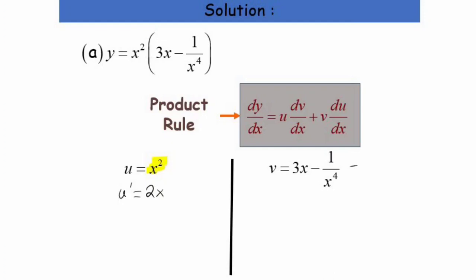And v equals 3x minus 1 over x to the power of 4, which we rewrite as 3x minus x to the power of negative 4. When we differentiate v to find v prime, differentiating 3x gives 3, and differentiating negative x to the power of negative 4 gives positive 4x to the power of negative 5. So v prime equals 3 plus 4 over x to the power of 5.